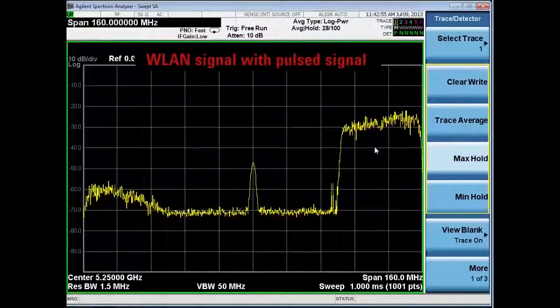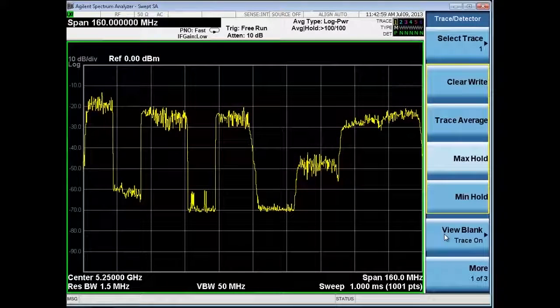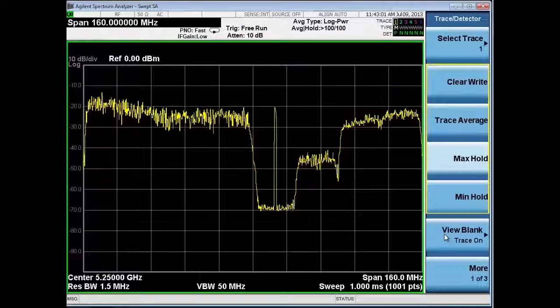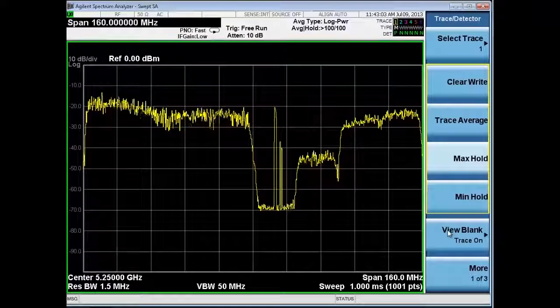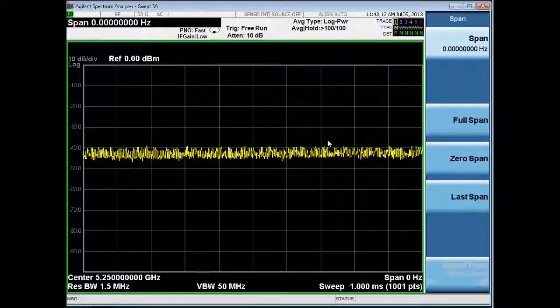Next, let's take a look at a wireless LAN signal. Again, as many commercial signals are bursted and most military communication signals are frequency hopping, it can really make it difficult to see and identify problems in the transmission with traditional swept analysis.